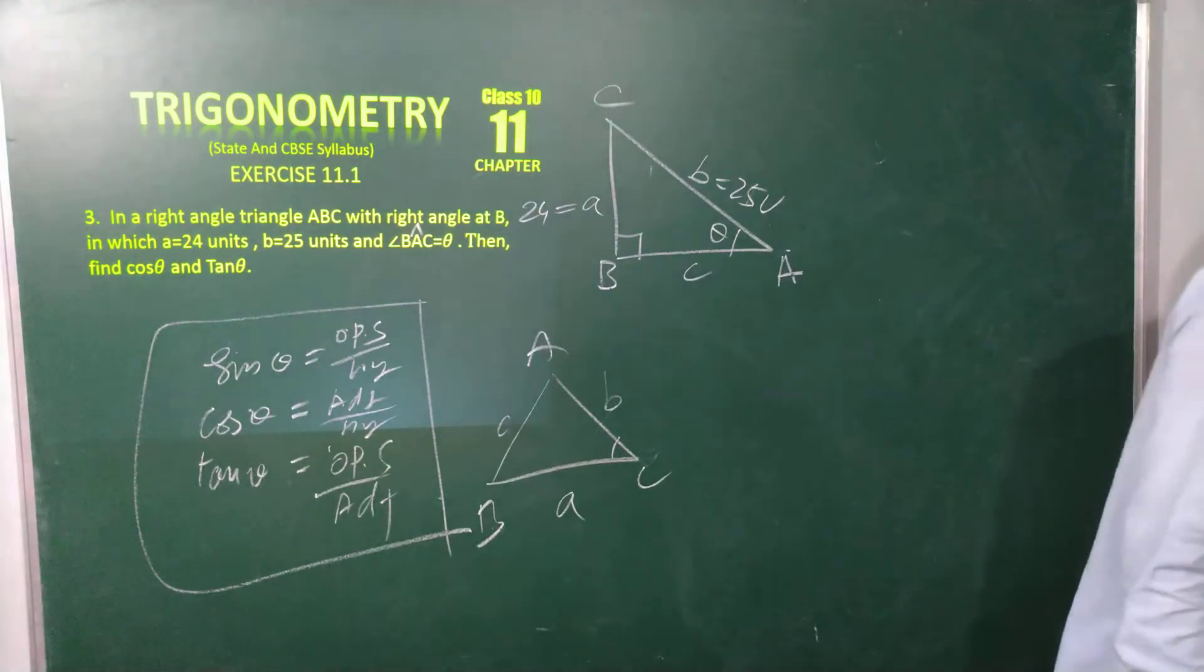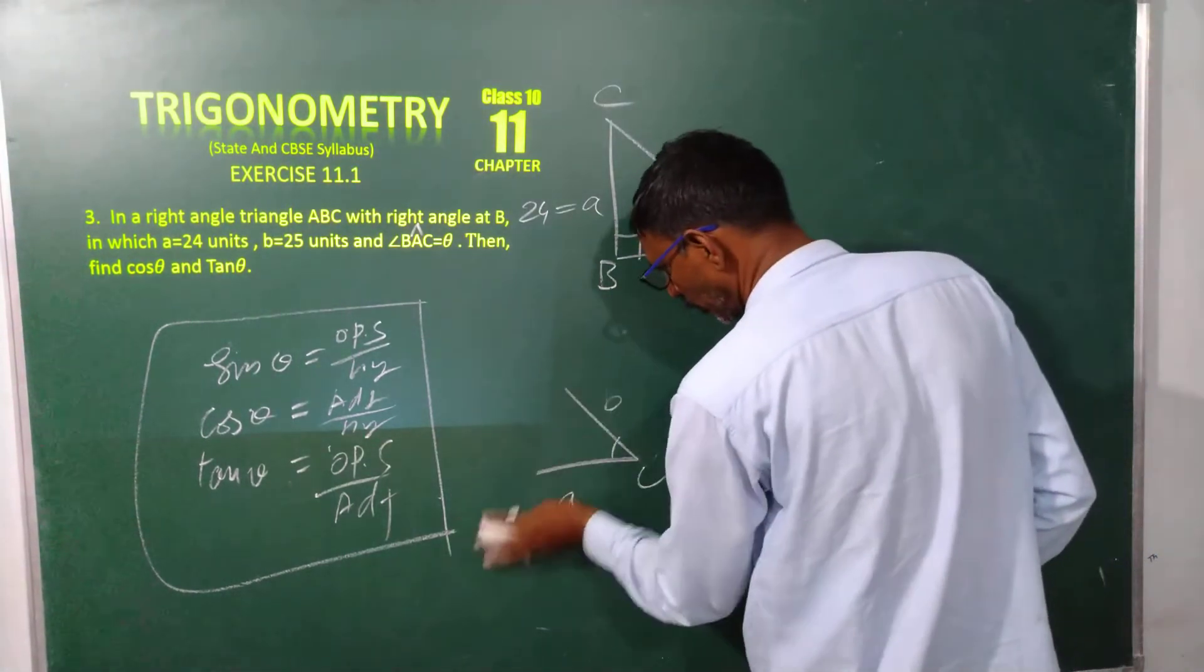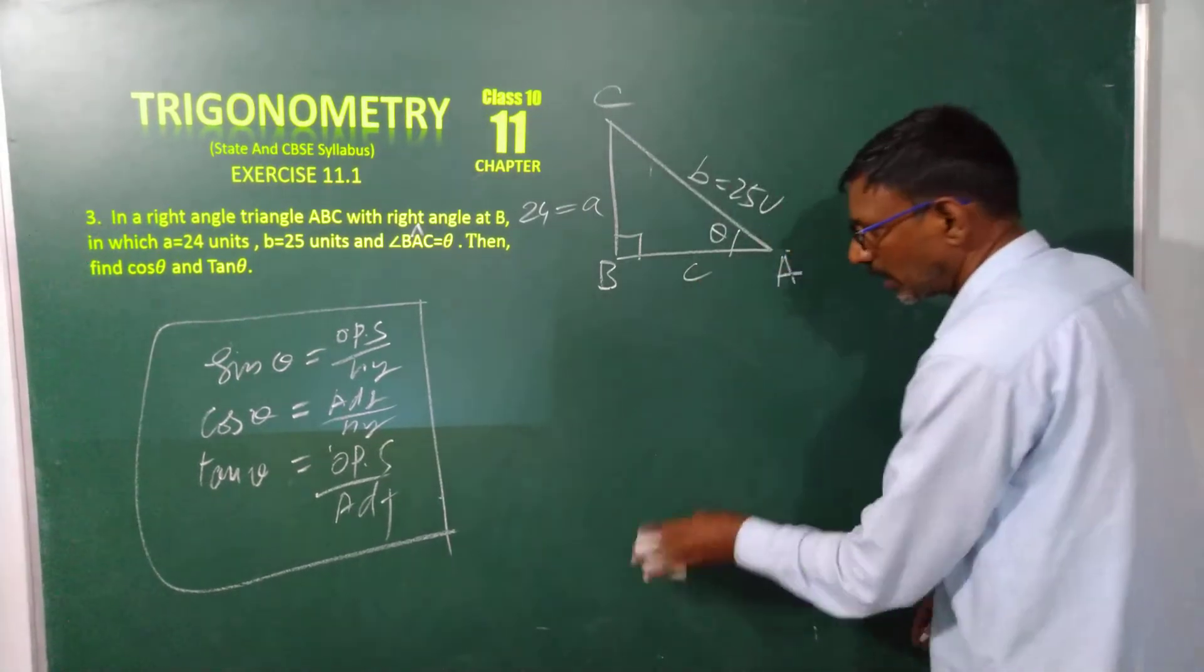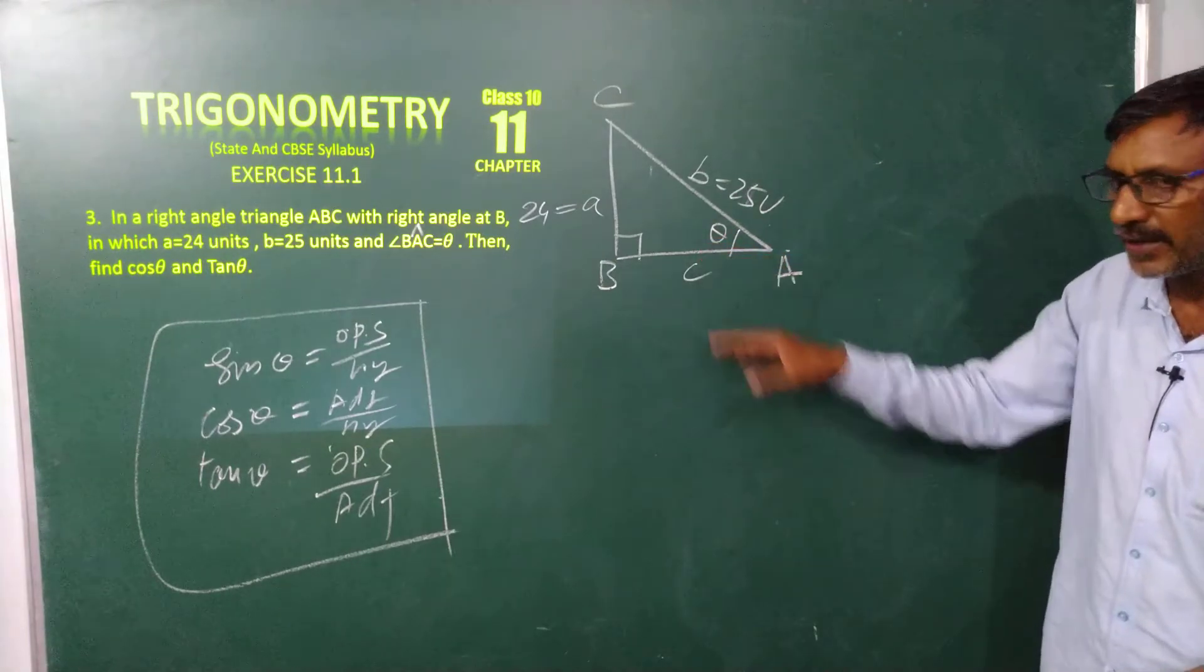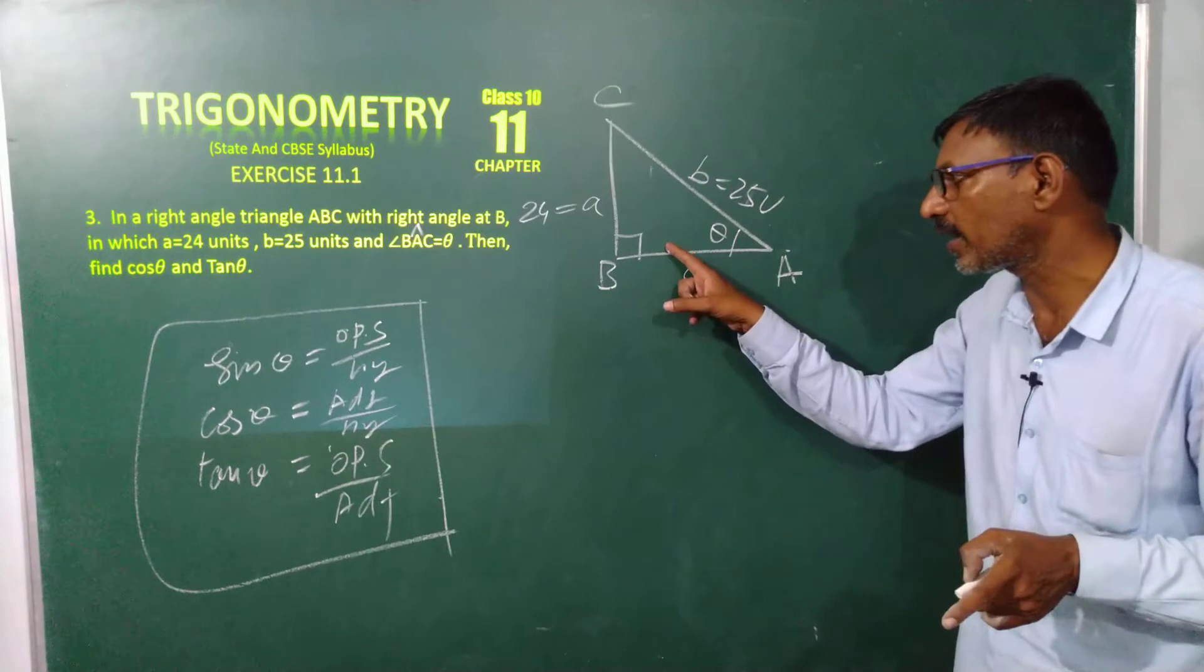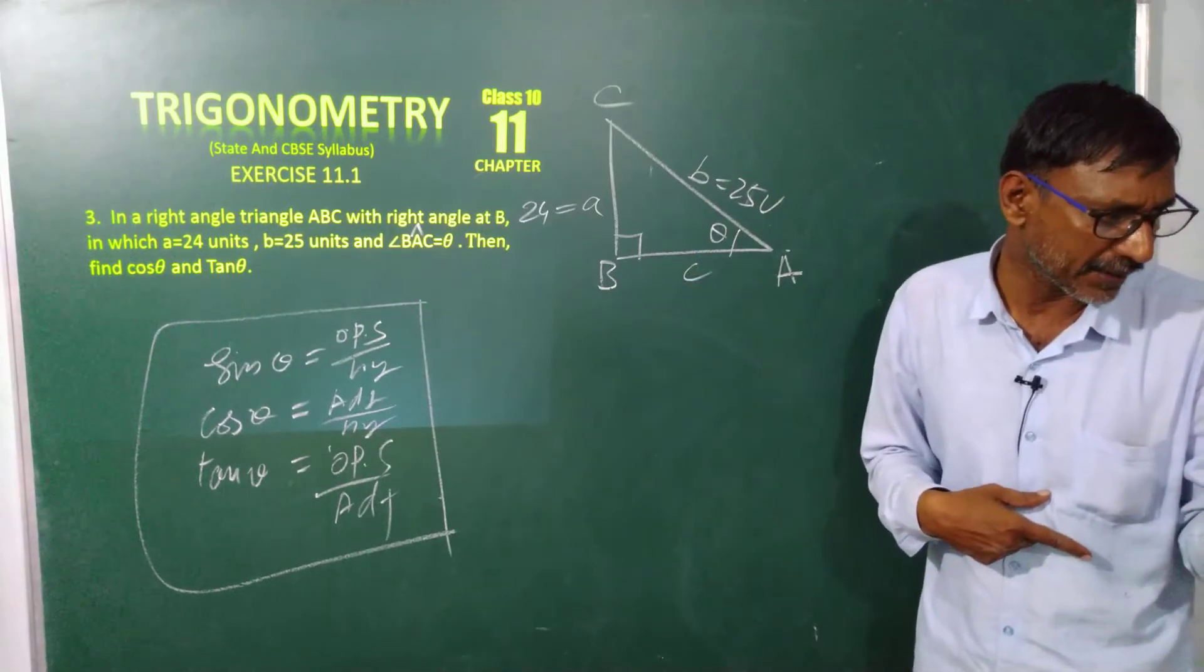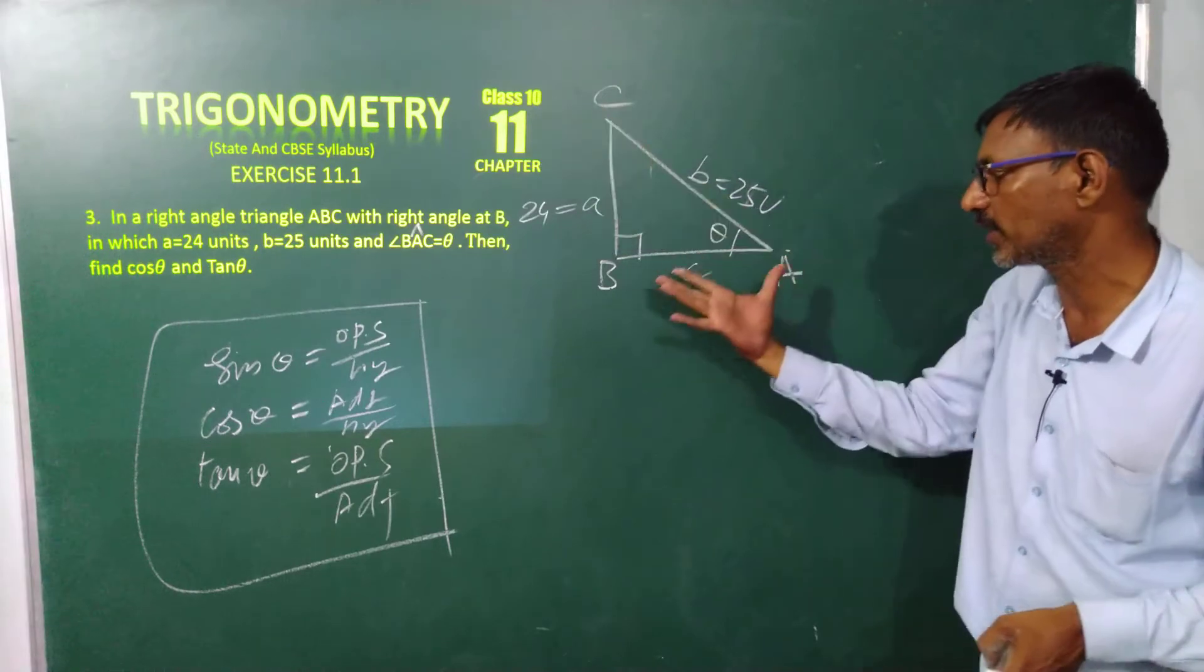Now, coming to the problem. I told you so many times, in trigonometry you are always using Pythagoras theorem. In a right angle triangle, we are using Pythagoras theorem. Hypotenuse square is equal to sum of the squares of the other sides.